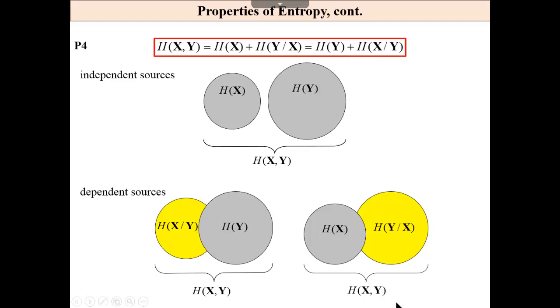Which is explained here graphically. This circle represents the entropy of source y and this, in blue background, is entropy of x if y is known. At the right side, we have the opposite situation, entropy of x, and at the right side, entropy of y if x is known. These two circles are overlapping. If they are not overlapping, it means that we have independent sources.